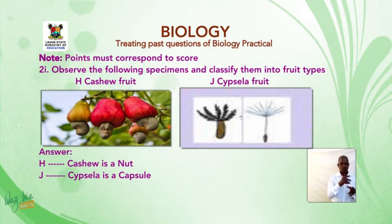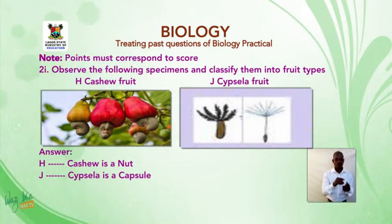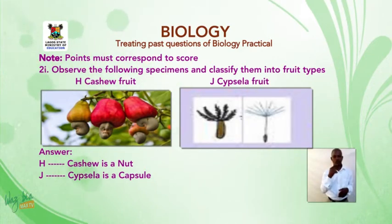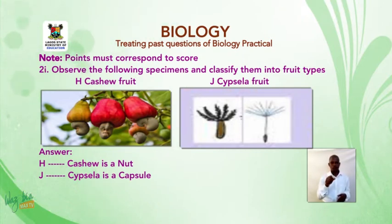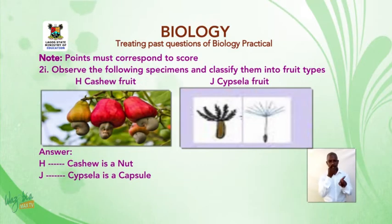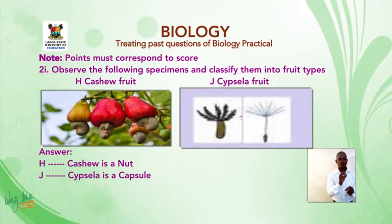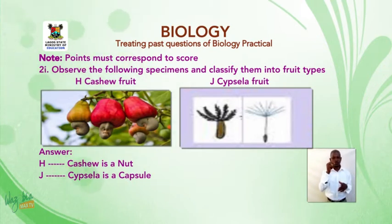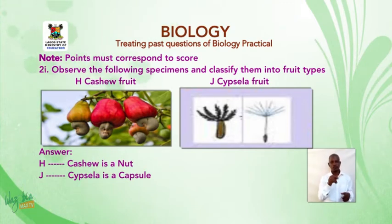Observe the following specimens and classify them into fruit types. H is cashew fruit, and when classified into fruit type, cashew fruit is a nut. J is a siliqua fruit and is a capsule.